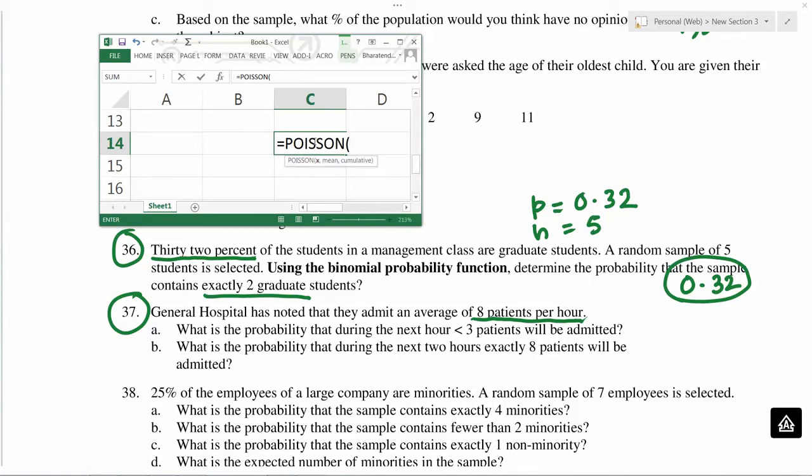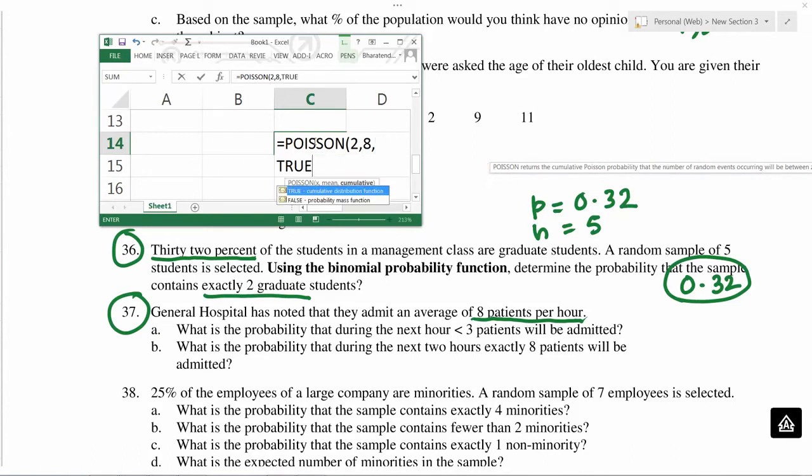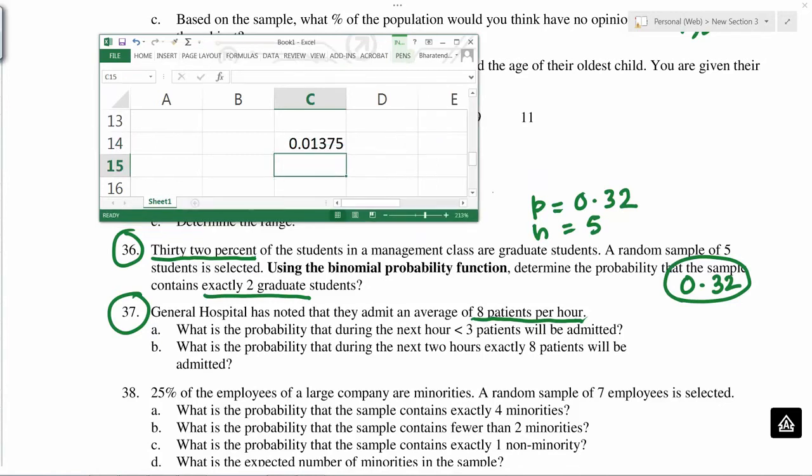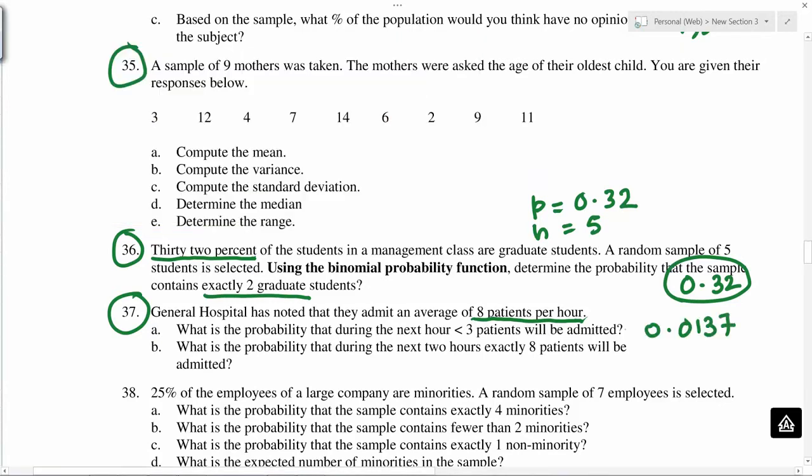And we are looking at less than 3, means less than or equal to 2, so I will put 2 here. Average is 8 patients, and because we are talking about less than or equal to, we have to use true. 0.01375.